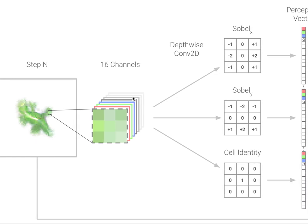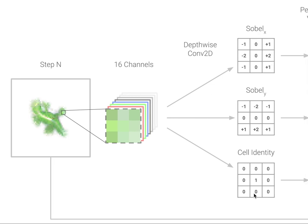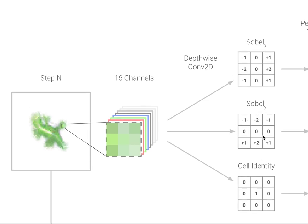A cell can come alive or die depending on its neighbors. The remaining 12 channels are what they call hidden channels — the cell is allowed to encode some hidden state there. So each cell is represented by a 16-dimensional vector. Each cell is allowed to look at three things: its own state (its own 16-dimensional vector), and its neighbors — it does this by doing a convolution with a Sobel filter. The Sobel filter is a fixed three-by-three filter that measures the gradient, basically the difference between what's to the left and what's to the right of the cell, and the same in the y direction. So the cell is allowed to look at gradients in the states of its neighbors, modeled after real cells looking at chemical gradients in their neighborhoods.